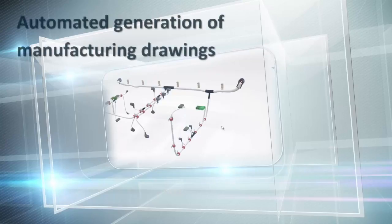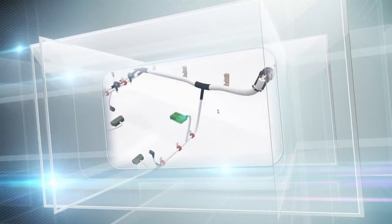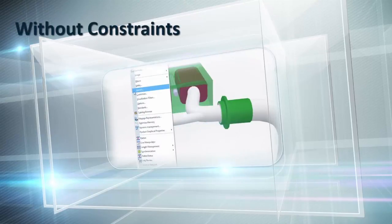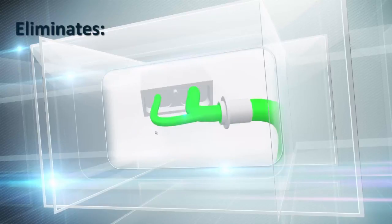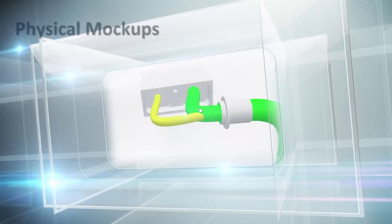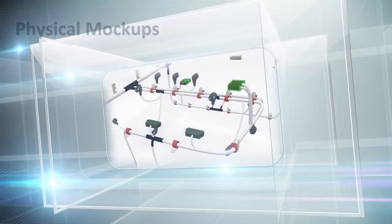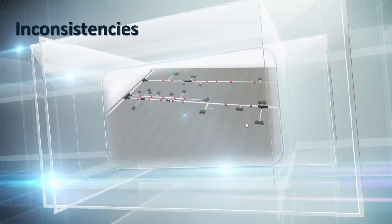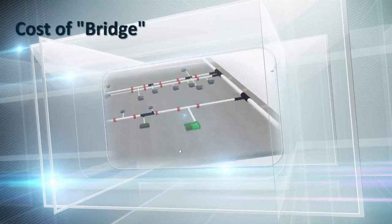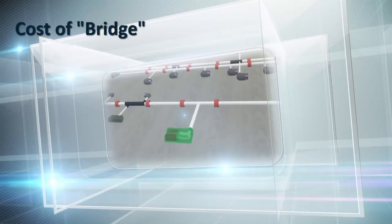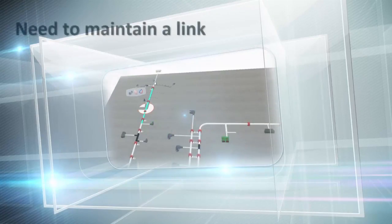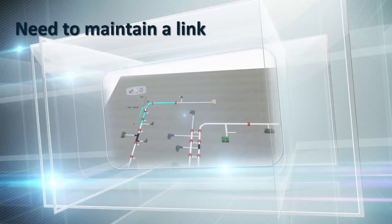This enables automated generation of manufacturing drawings and simplification of the CATIA 3D harness design methodology without the constraints imposed by downstream tools. It will also eliminate the need for costly, interactive, and difficult to maintain physical mock-ups, inconsistencies between the 3D mock-up and the manufacturing documentation, and the cost for developing, implementing, and maintaining a software interface or bridge between CATIA 3D harness design and downstream tools for producing manufacturing documentation. It also eliminates the need to maintain a link between electrical schematics and manufacturing documentation.